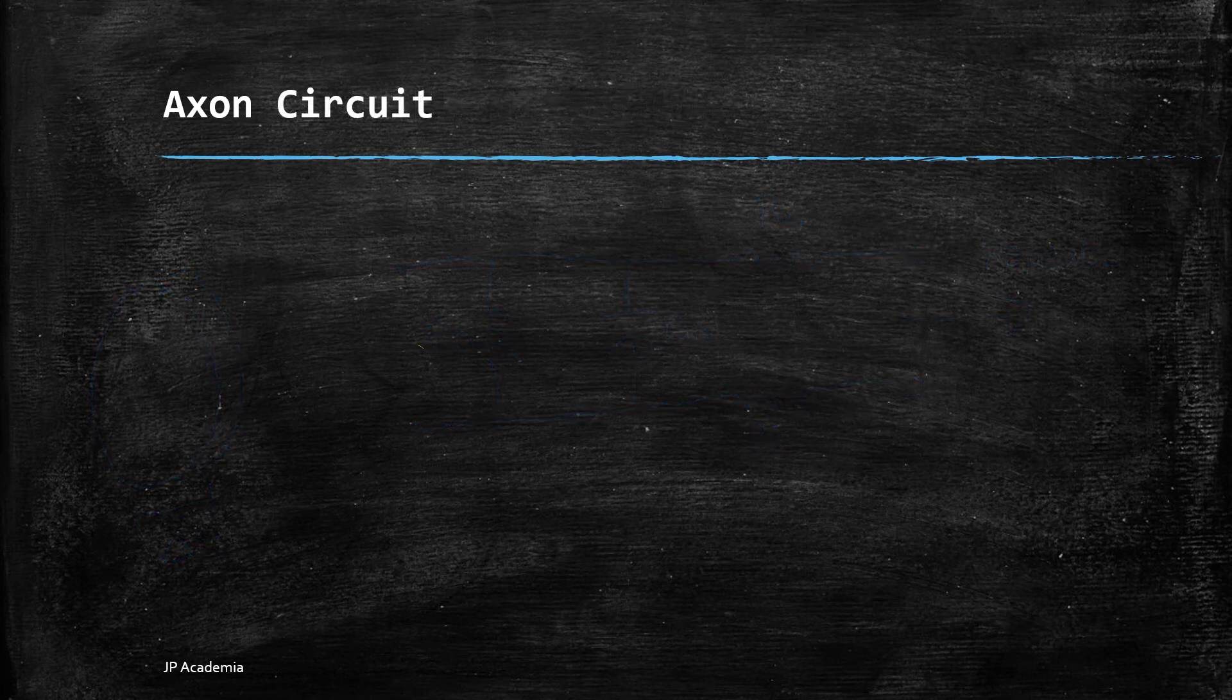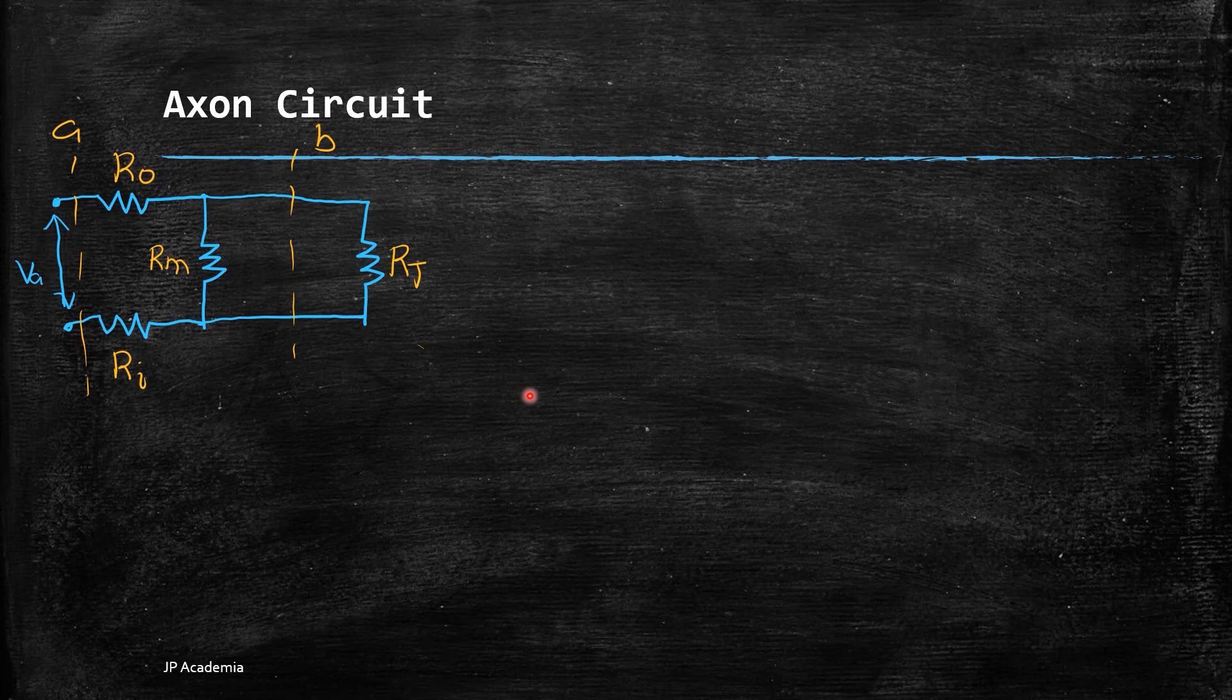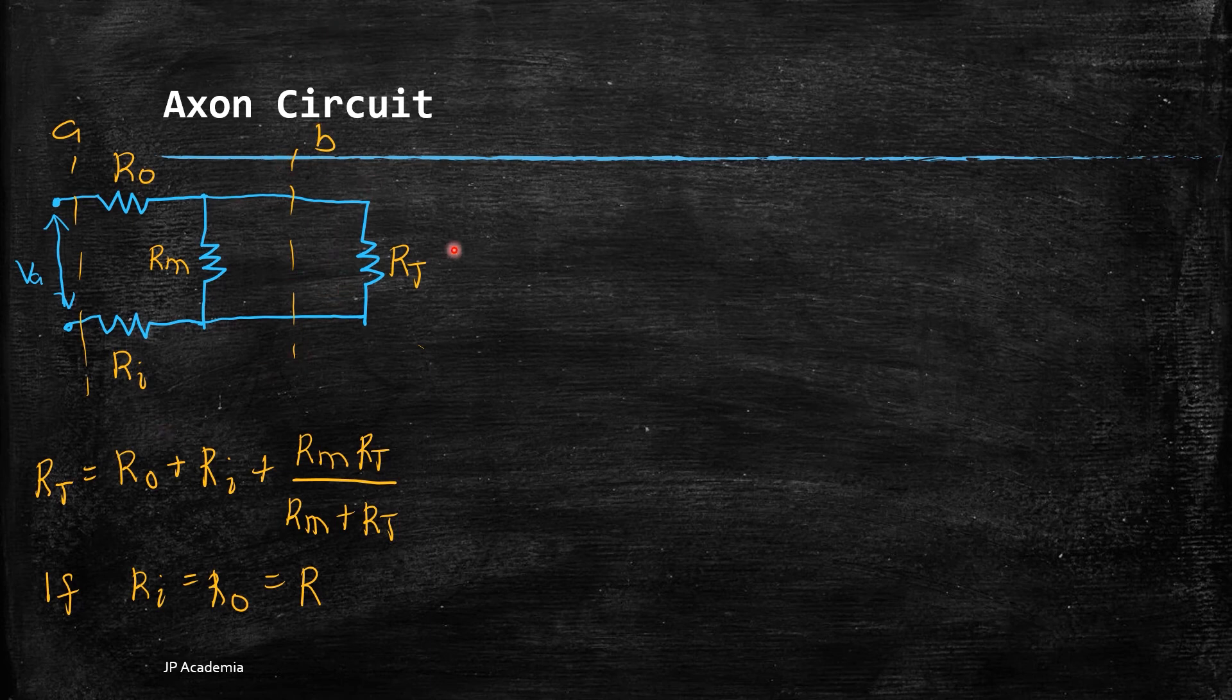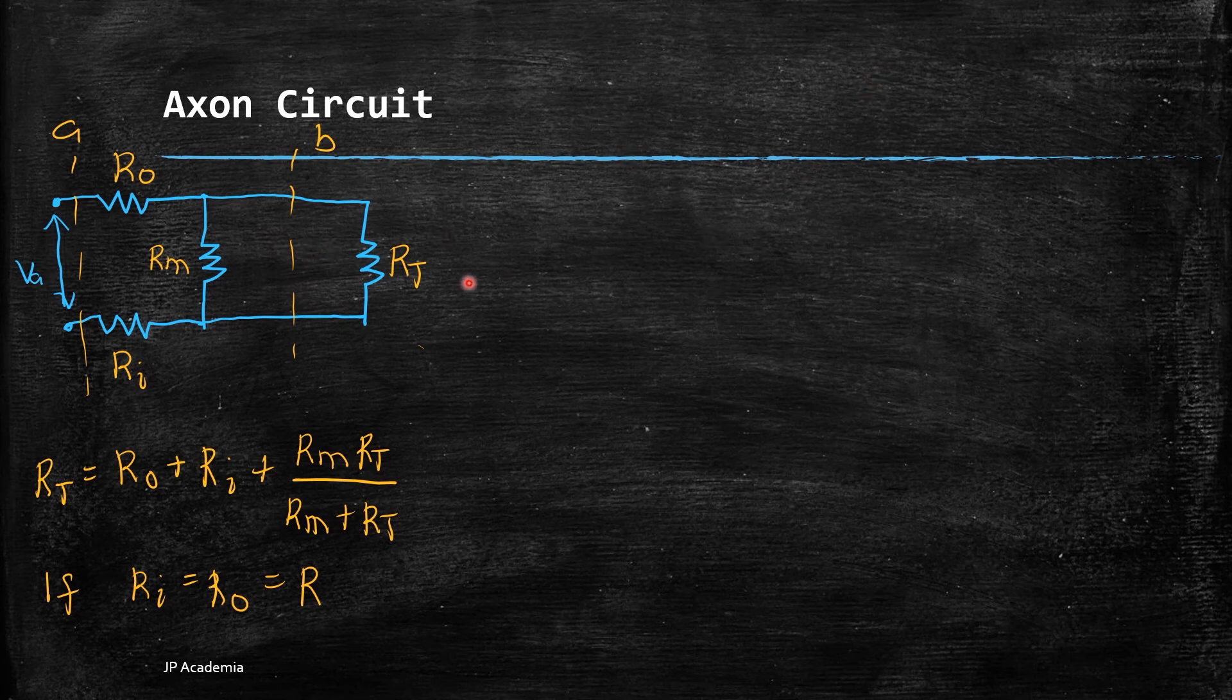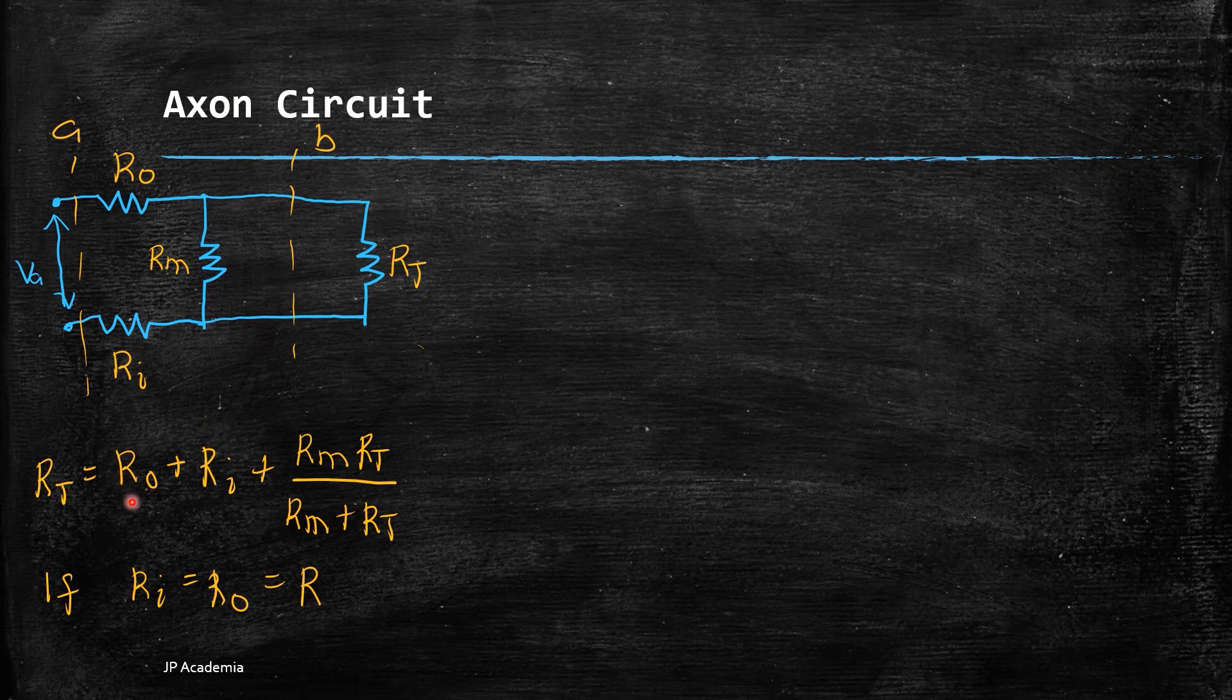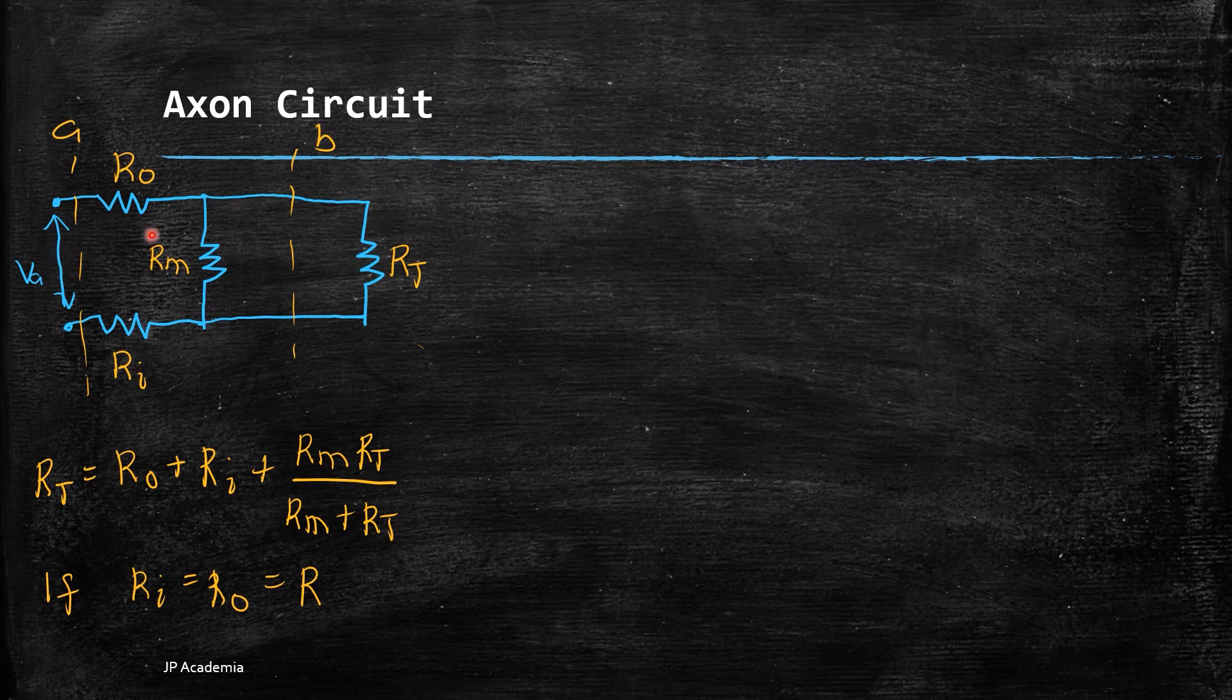We can approximate the circuit model for axon by neglecting the capacitances to simplify our circuit. This will result in an infinite length of resistances. Let us simplify this by representing the total resistance to the right of this line B as R_T. Let R_T be the equivalent resistance from the right of this line A.